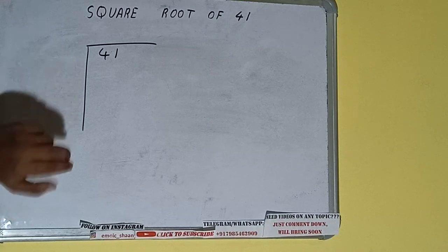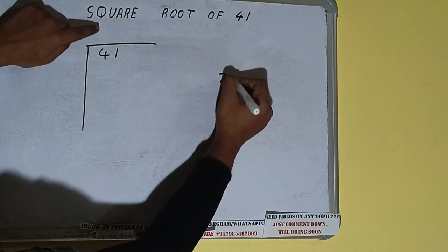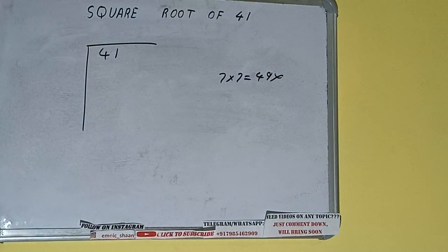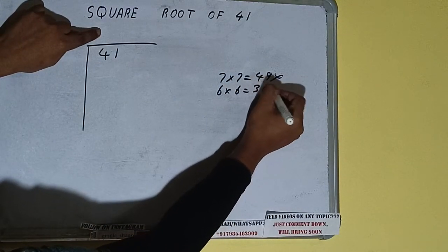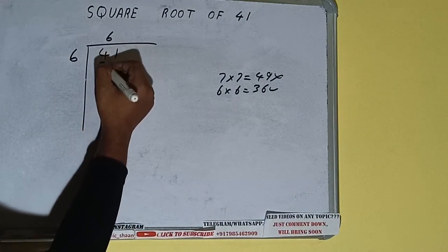Whatever number we write here, we have to write here also. If we write 7 here and 7 here, it will be 49, which is greater than 41, so we cannot take it. If we write 6 here and 6 here, it will be 36, which is good to take. So 6 here and 6 here, 36.